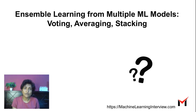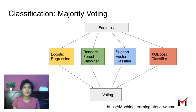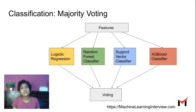So what if we want to combine multiple different types of ML models? This is a very common strategy in many online competitions and also in several production systems. So how do we do this?